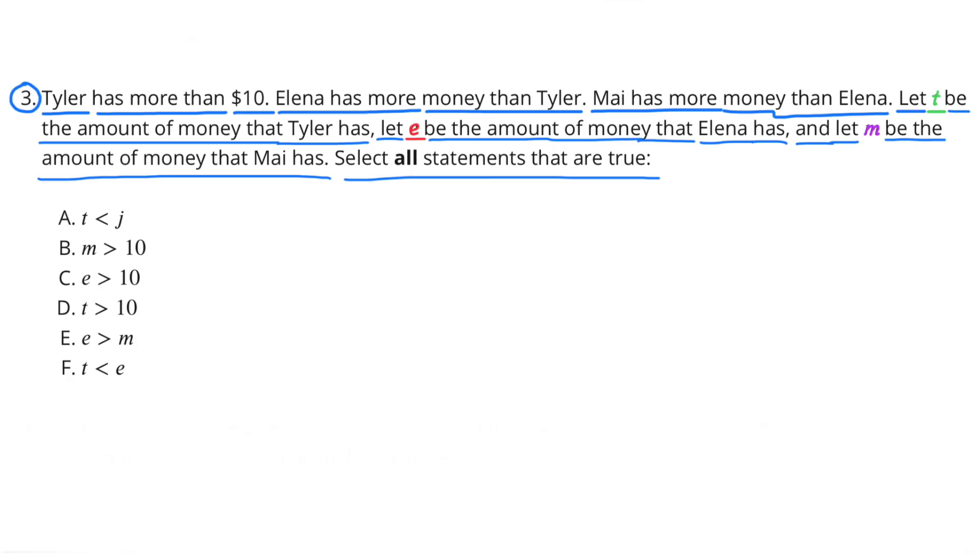Number 3. Tyler has more than $10. Elena has more money than Tyler. Mai has more money than Elena. Let T be the amount of money that Tyler has, let E be the amount of money that Elena has, and let M be the amount of money that Mai has. Select all statements that are true.